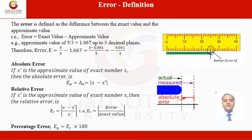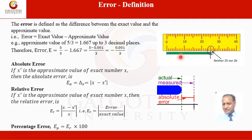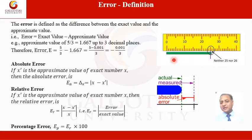Let us define an error formally. The error is defined as the difference between the exact value and the approximate value. Looking at the diagram, there is a stick whose length is greater than 25 units but less than 26. If we take 26 as the approximated value, the difference between the approximated value and the exact value is called an error. We can take 25 or 26 as the approximate value.